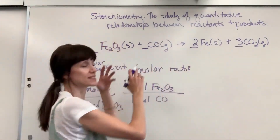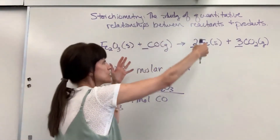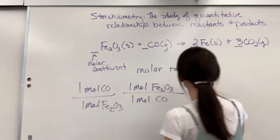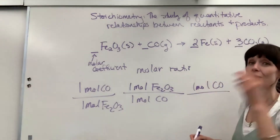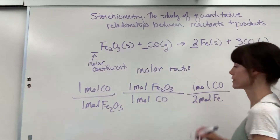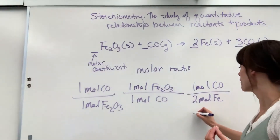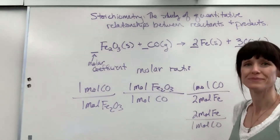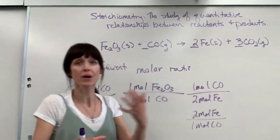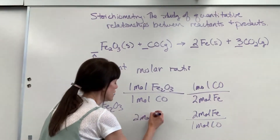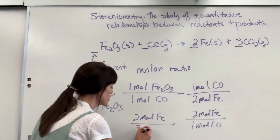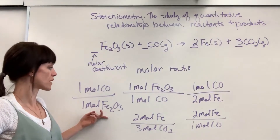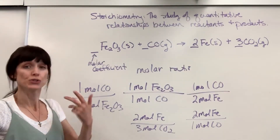Let's take the carbon monoxide to iron: one mole of carbon monoxide will produce two moles of iron. And then the reciprocal — also a true statement — if I produce two moles of iron, then it came from one mole of CO, of carbon monoxide. You can also compare on the product side: if I have two moles of iron, it means that we also produced three moles of carbon dioxide. I could also reciprocate that: if I have three moles of carbon dioxide, it will also have two moles of iron that have been produced.